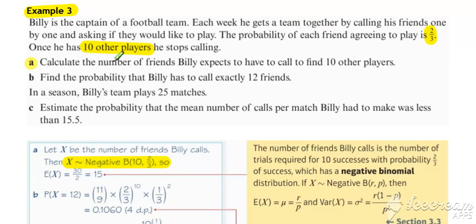Part A: the number of friends Billy expects to have to call. This is the expected value of the negative binomial.